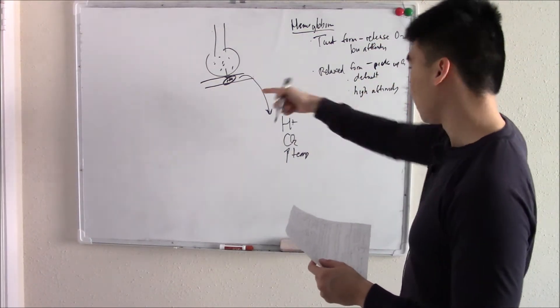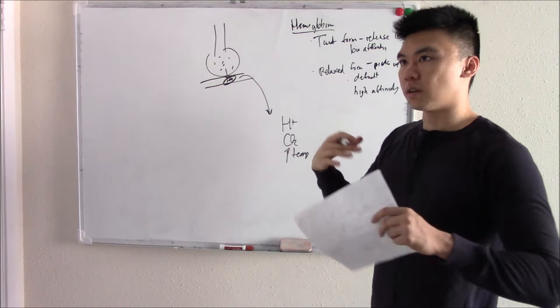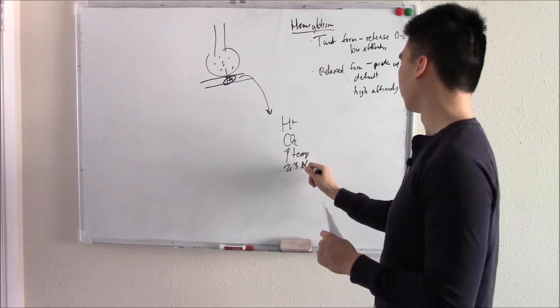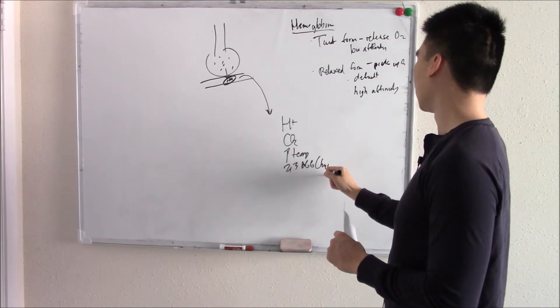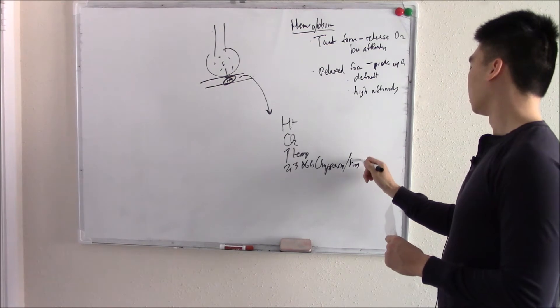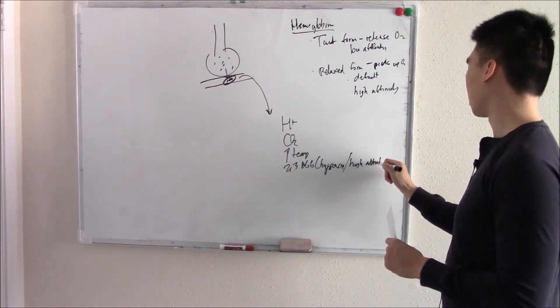And then something less intuitive: a lot of cells, even your red blood cells, when they're in hypoxia, they release a compound called 2,3-BPG. Or any causes of hypoxia, it doesn't have to be exercise. It could be like high altitude, or just not getting enough oxygen.